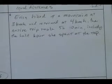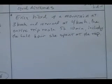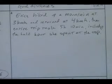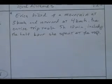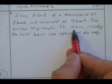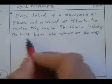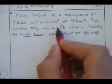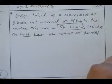A to-and-from problem. Erica hiked up a mountain at 3 kilometers and returned at 4. So we know there and back was the same distance. The entire trip took 5 hours and 10 minutes, including half an hour she spent at the top. She spent a half hour at the top, so she really wasn't traveling for 5 hours and 10 minutes.